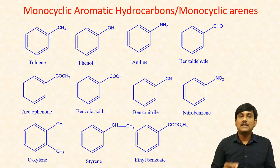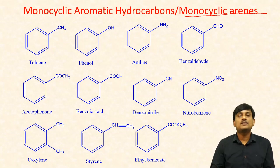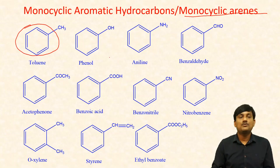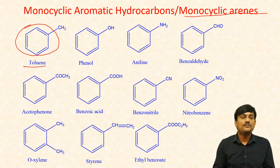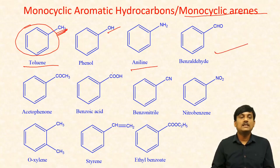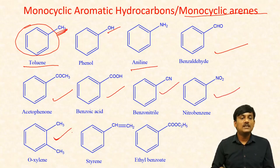Here I have taken some monocyclic aromatic hydrocarbons. In case of monocyclic aromatic hydrocarbons, you can find only one benzene ring or one phenyl group. These are some examples: toluene (the phenyl ring has a CH3 group), phenol, aniline, benzene, benzaldehyde, acetophenone, benzoic acid, benzonitrile, nitrobenzene, xylene, styrene, and ethyl benzoate.